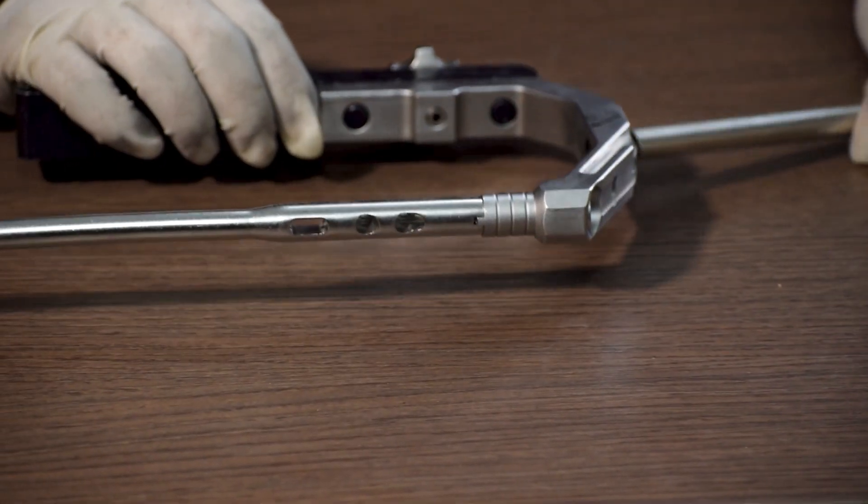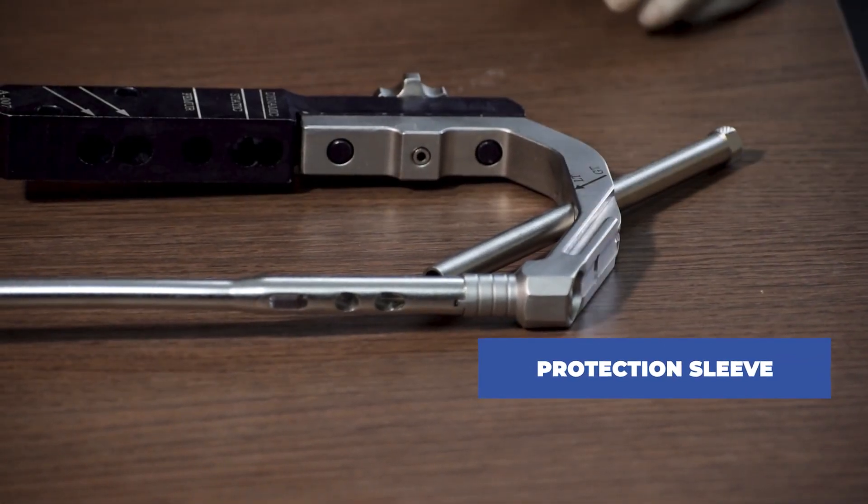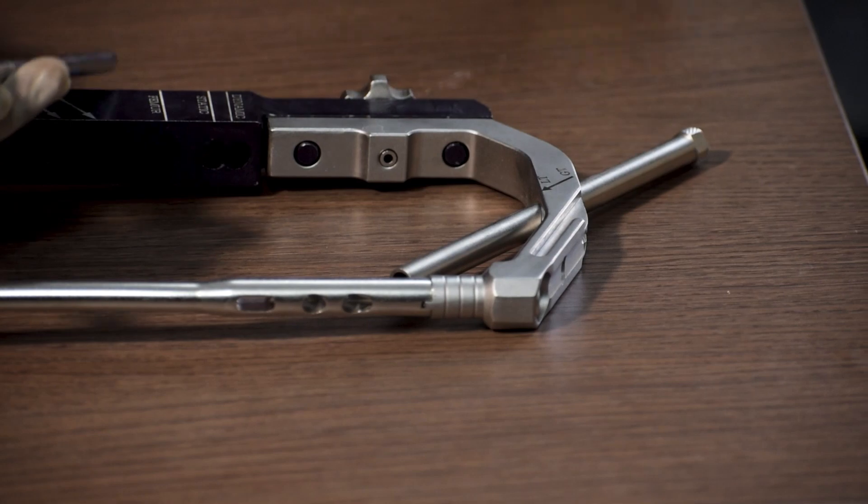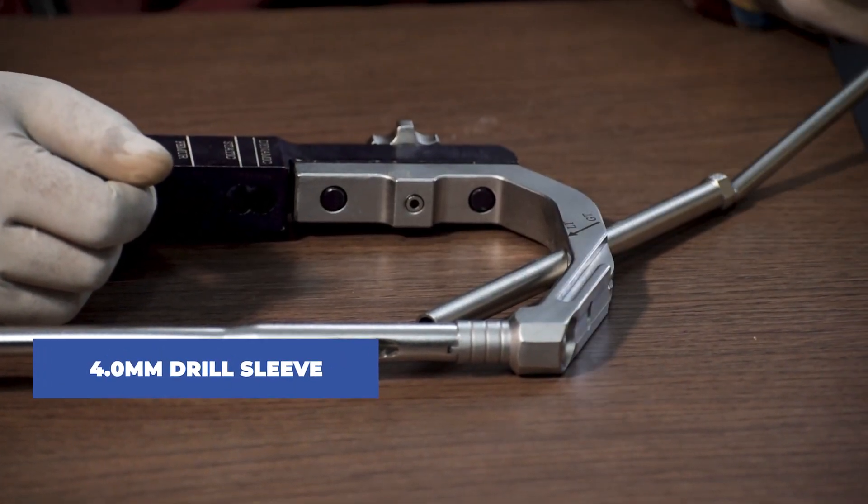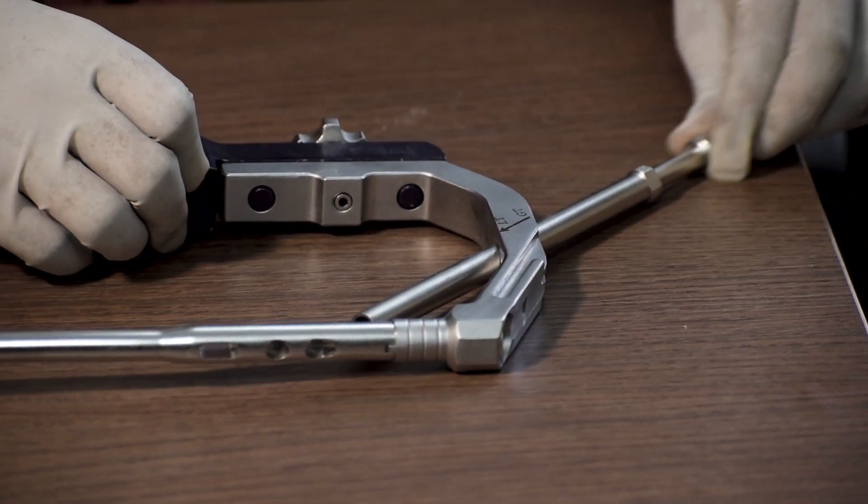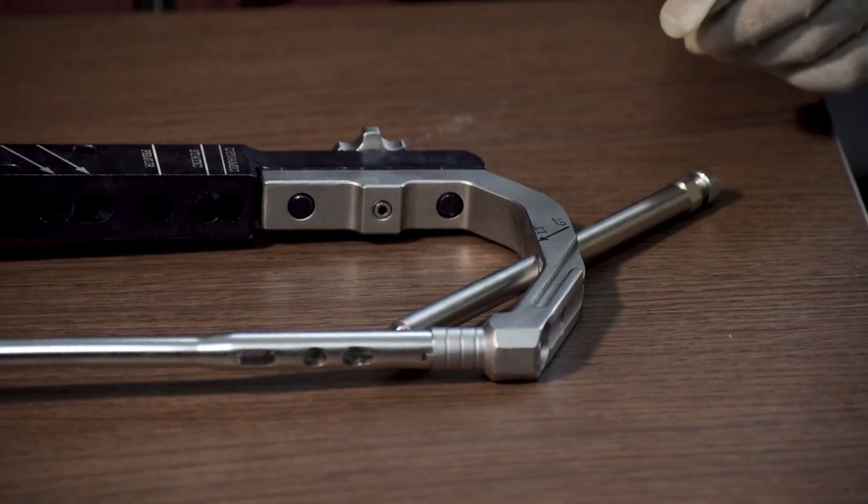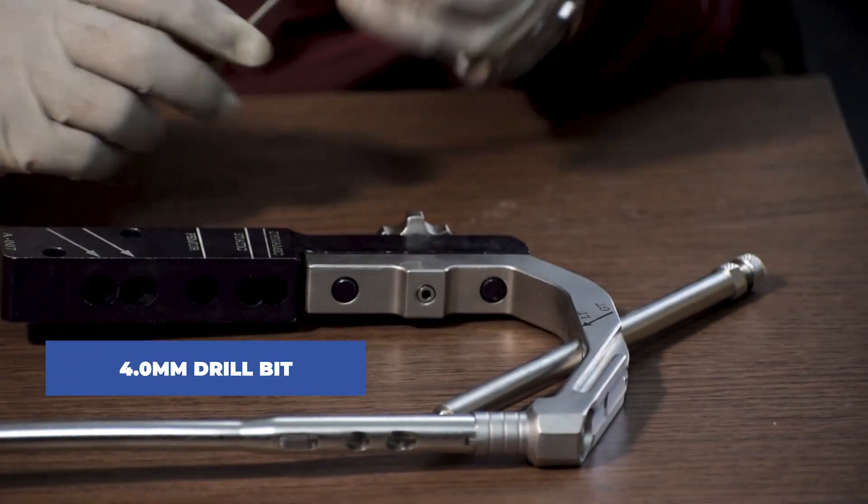First we will have to fix the protection sleeve. Then we will pass a 4mm drill sleeve through the protection sleeve. Then we will do the drilling with the help of a 4mm drill bit.